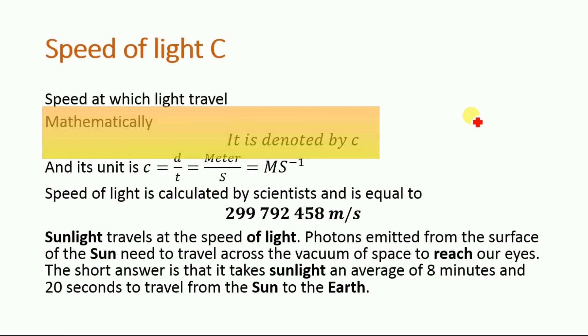Mathematically, the speed of light is denoted by c. And we know that the speed is equal to d by t, where d is the distance and t is the time.